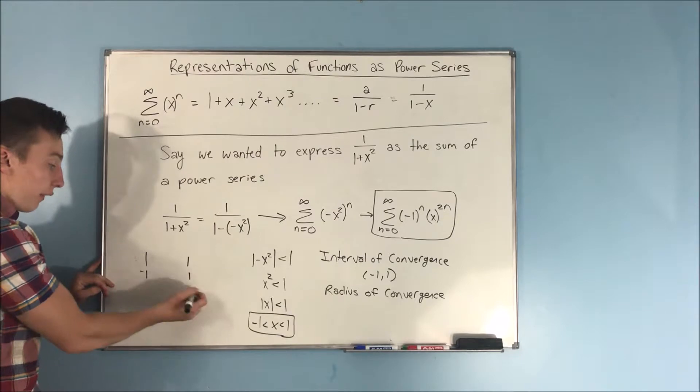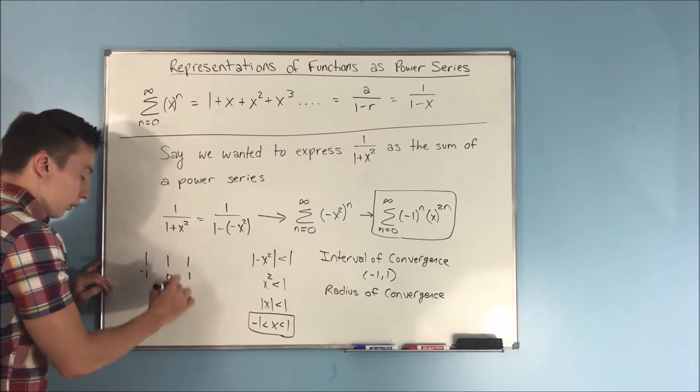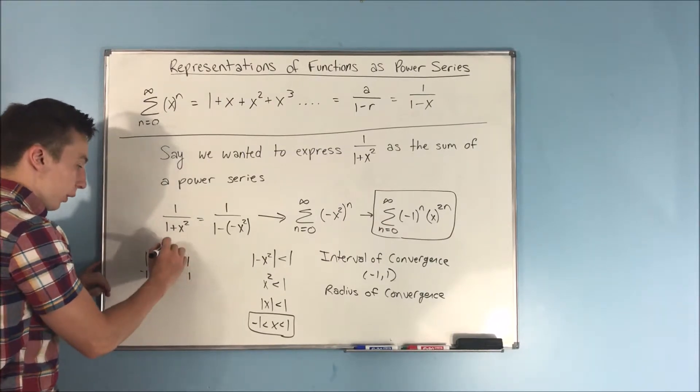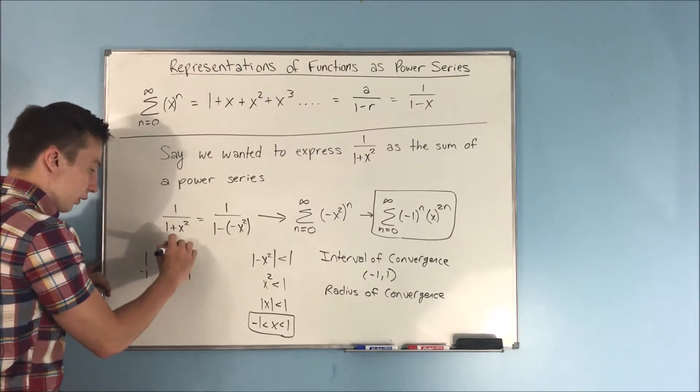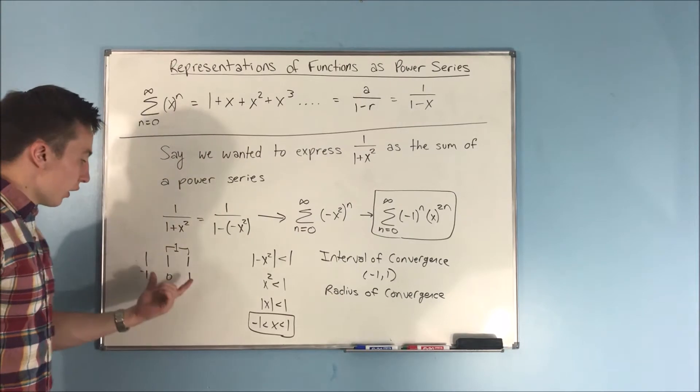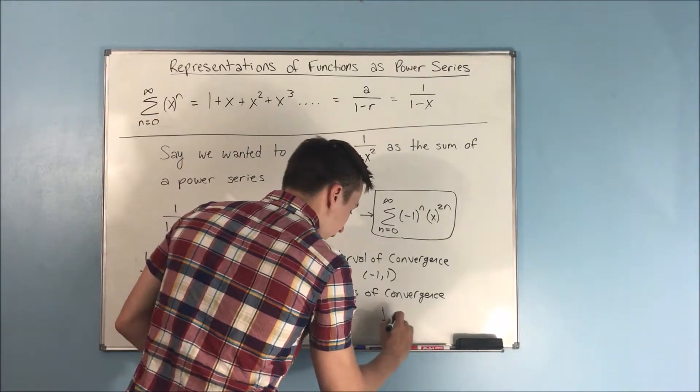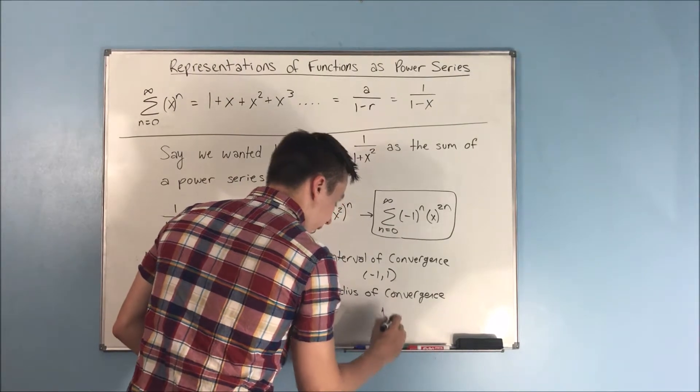And the radius is just half of that interval. So from 0 to 1, how much am I going over? Well, that's just 1. So my radius is going to be, or my radius of convergence is going to be 1.